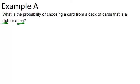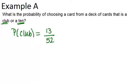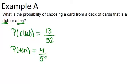Let's think about each of these events separately first. The probability that it's a club will be 13 out of 52, because there are 52 cards in the deck and a quarter of those — 13 of those — are clubs, because there are four different suits. Now, the probability that it's a 10: there are four 10s in the deck, one for each suit, and again 52 cards total. So the probability is 4 out of 52.